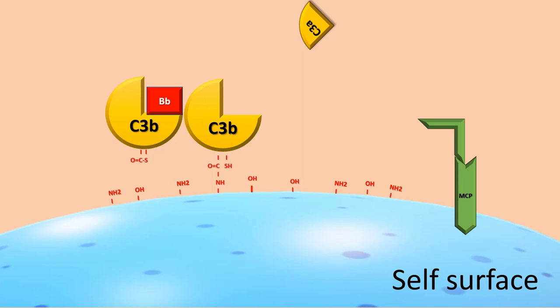The binding sites of properdin and I-factor are very close, so they cannot bind simultaneously, directing the regulation through positive, respectively negative feedback. In that way, the complement system discriminates between self and non-self.